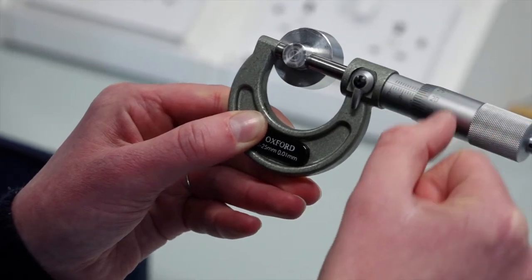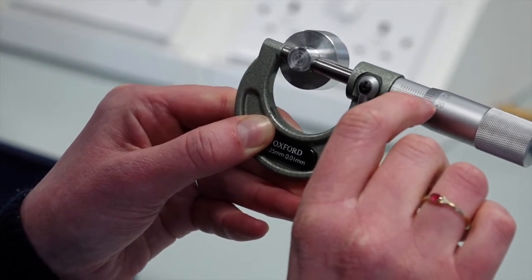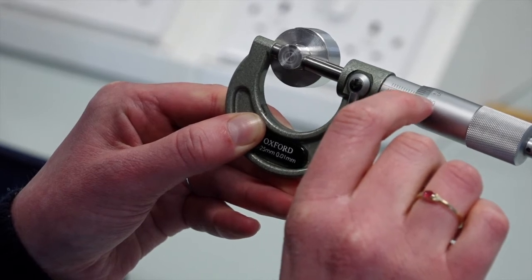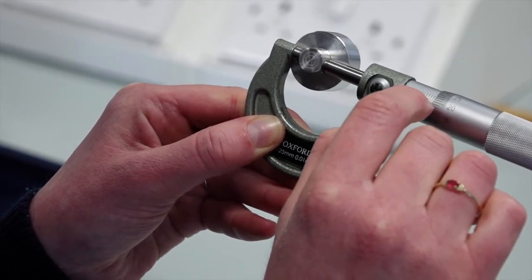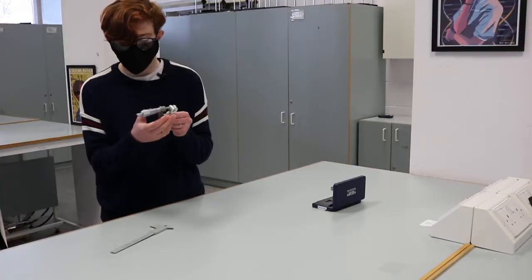In this case, the reading on the main scale is just past the 10mm mark. On the rotating scale, it's between 0.2 and 0.21mm. It is closer to 0.21mm, so the overall measurement is 10.21mm.